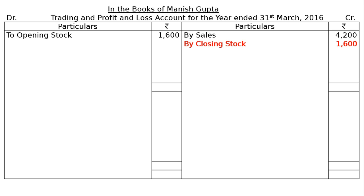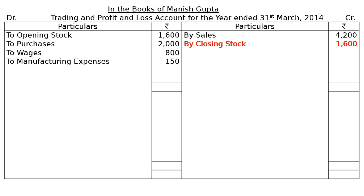On the debit side: to opening stock Rs. 1600, to purchases Rs. 2000 (no returns), to wages Rs. 800, to manufacturing expenses (also called factory expenses, production expenses, or direct production expenses) Rs. 150, and to carriage inward Rs. 160. The credit side has the higher value; total the credit side which comes to Rs. 5800.